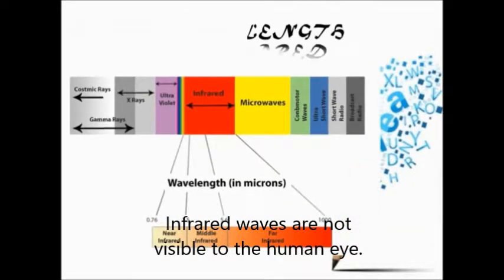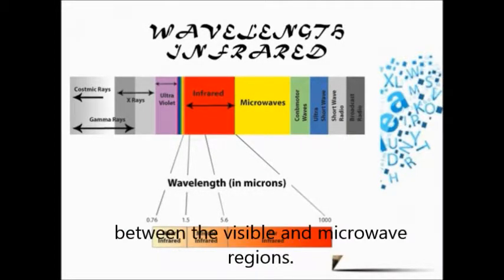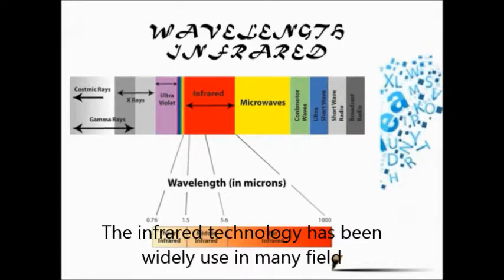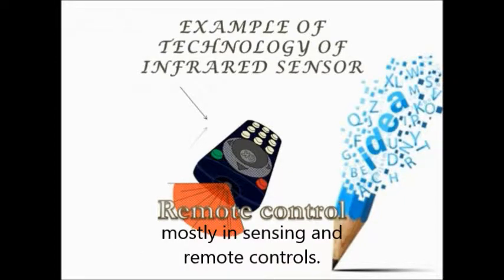Infrared waves are not visible to the human eye. In the electromagnetic spectrum, infrared radiation can be found between the visible and microwave regions. The infrared waves typically have wavelengths between 0.75 and 1000 micrometers. The infrared technology has been widely used in many fields, mostly in sensing and remote controls.